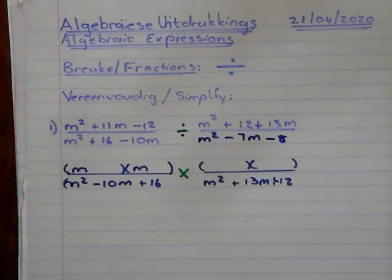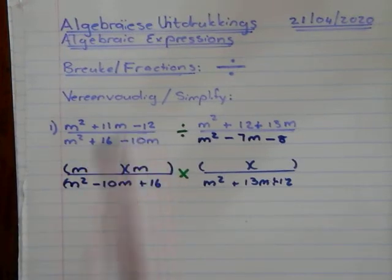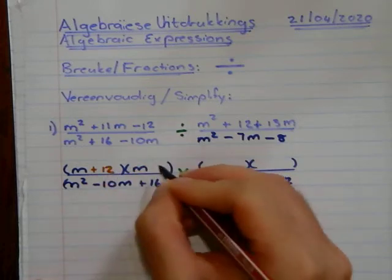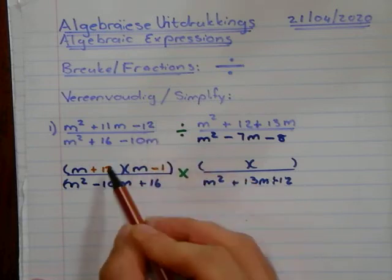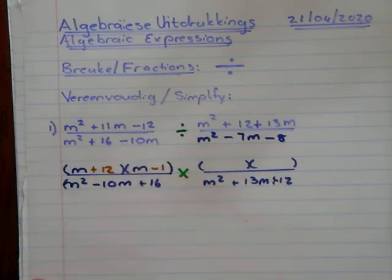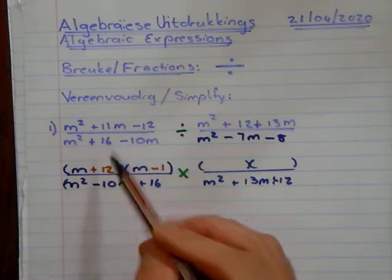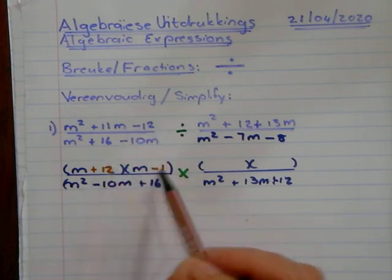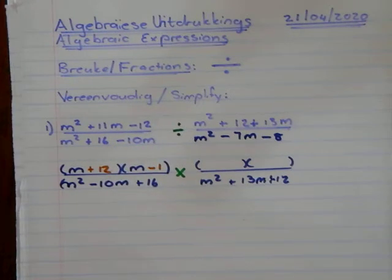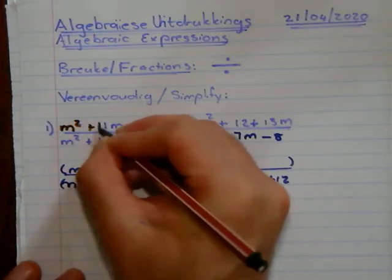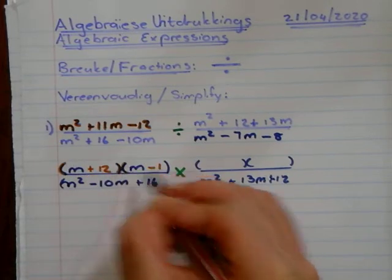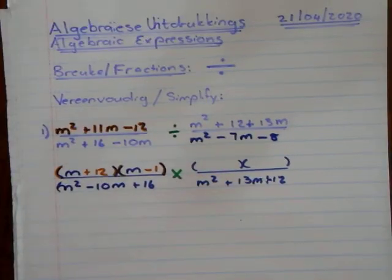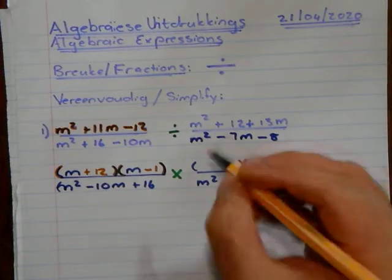Okay, let's factorize this one. One times what gives me 12 and not minus? So I'm going to have plus 12 and minus 1. 12 times 1 minus 1 is negative 12. 12 minus 1 is 11. So 12 more 1 minus 1 gives minus 12.